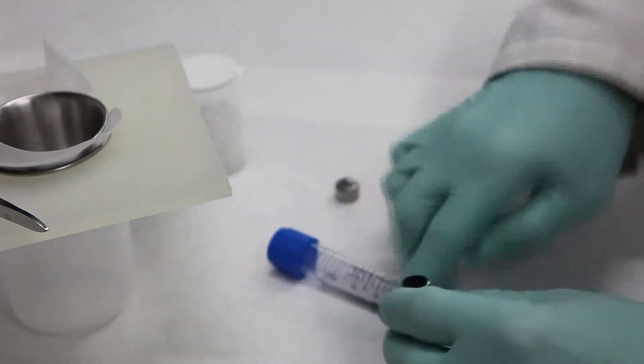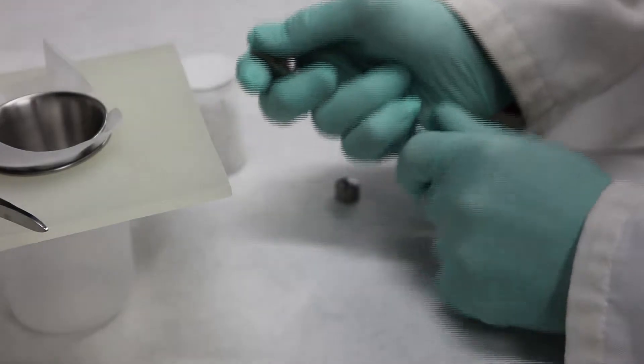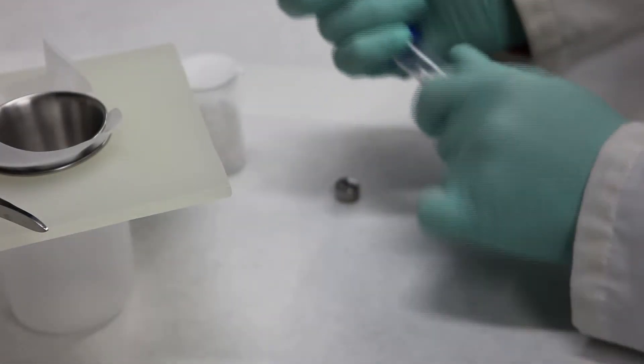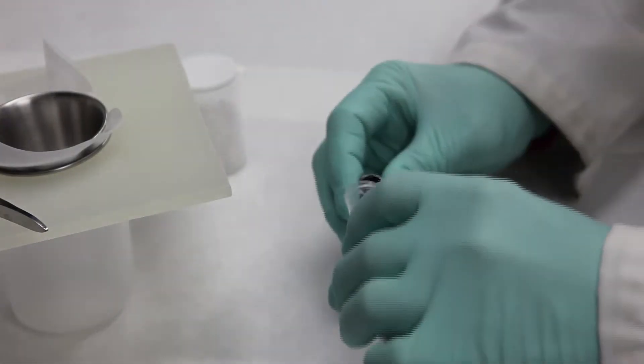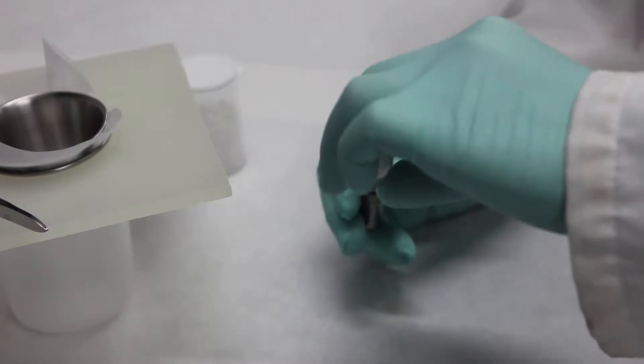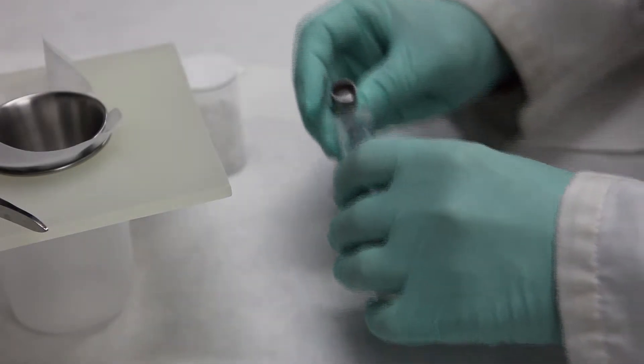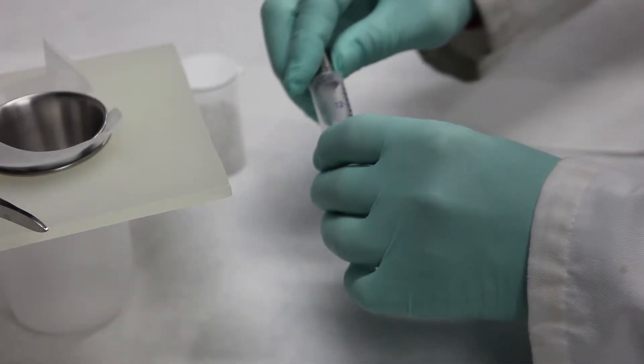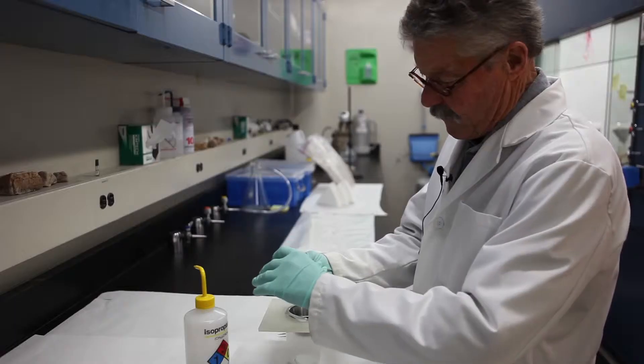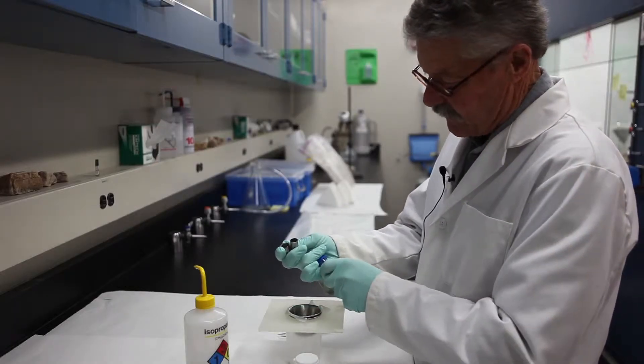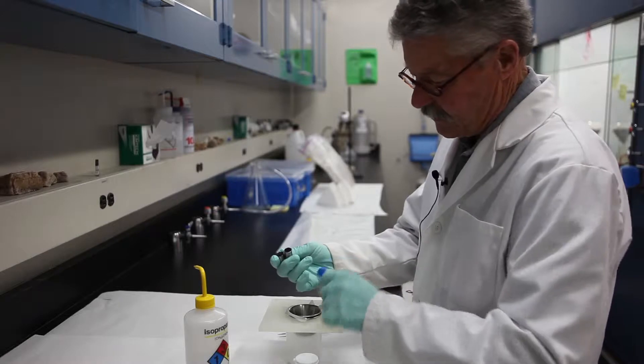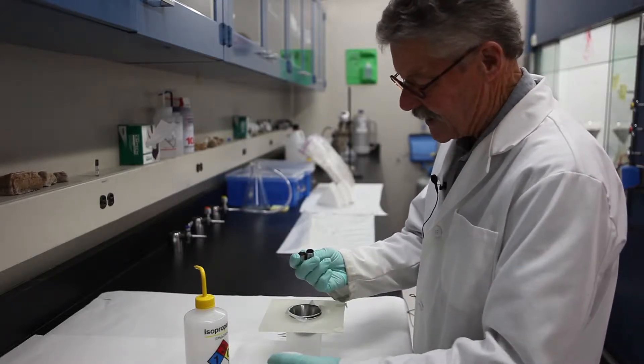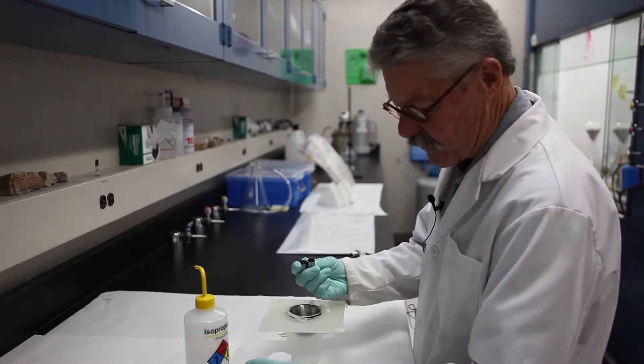Next, we're going to take the sample and pour the sample into it. That's a little too much, so we're going to pour it back. We want to make sure that the amount of the sample and the acrylic BBs do not exceed 50% of the volume of the capsule, otherwise the BBs will not have the opportunity to do their work.